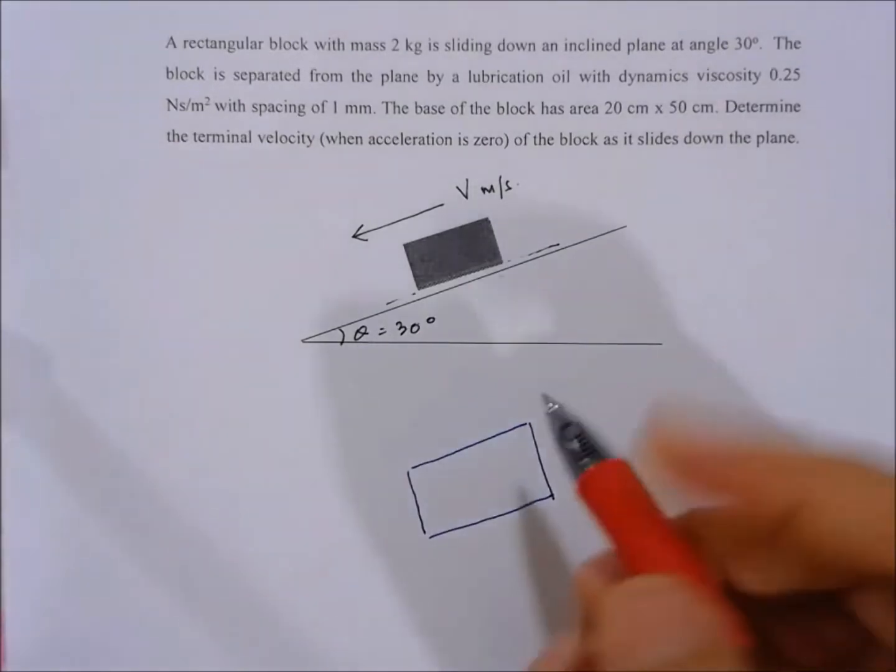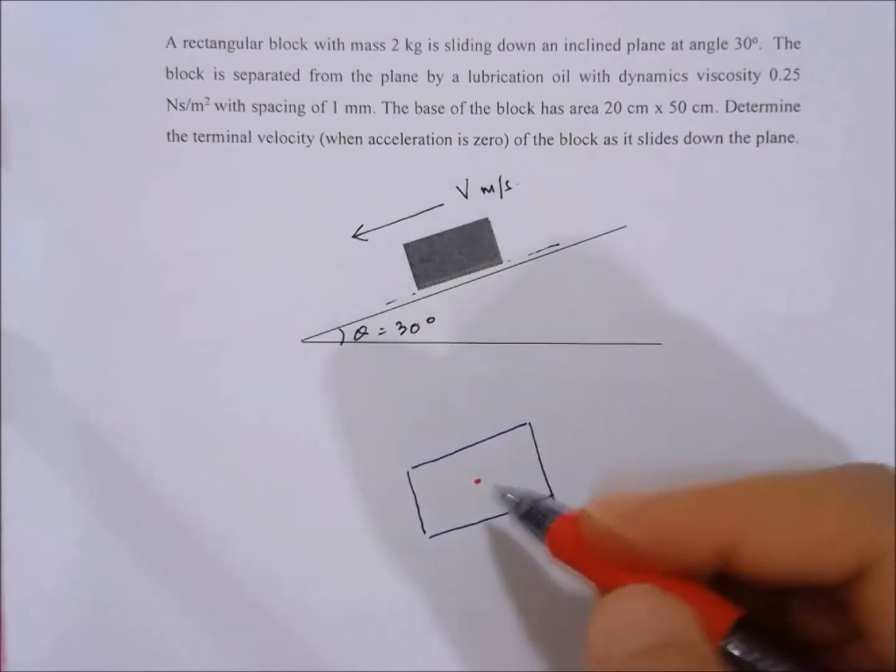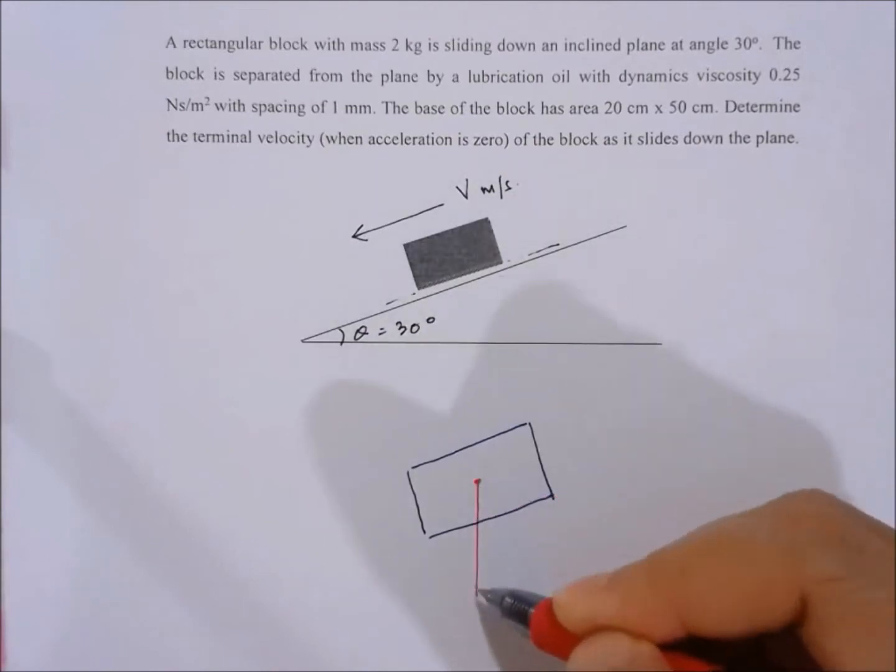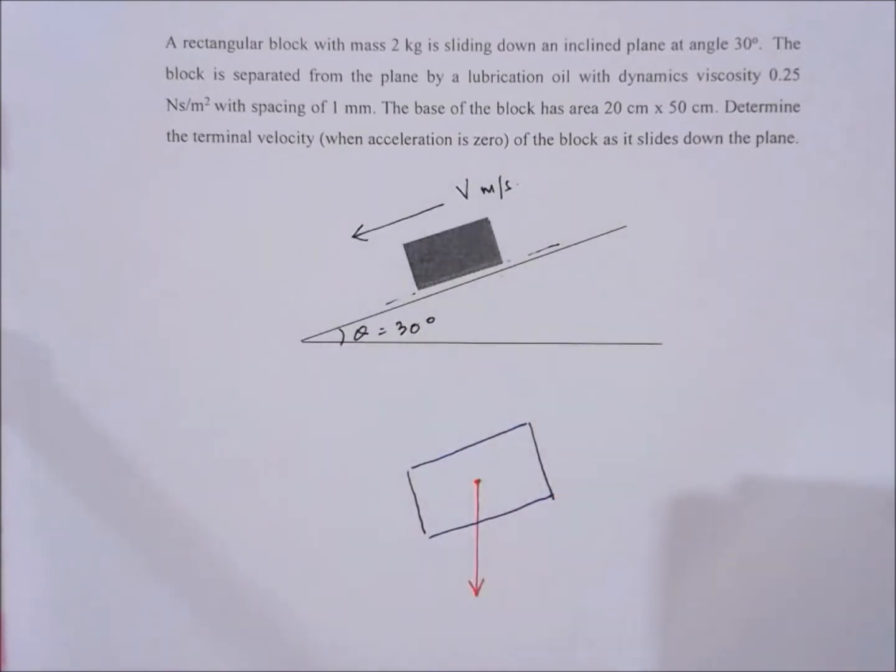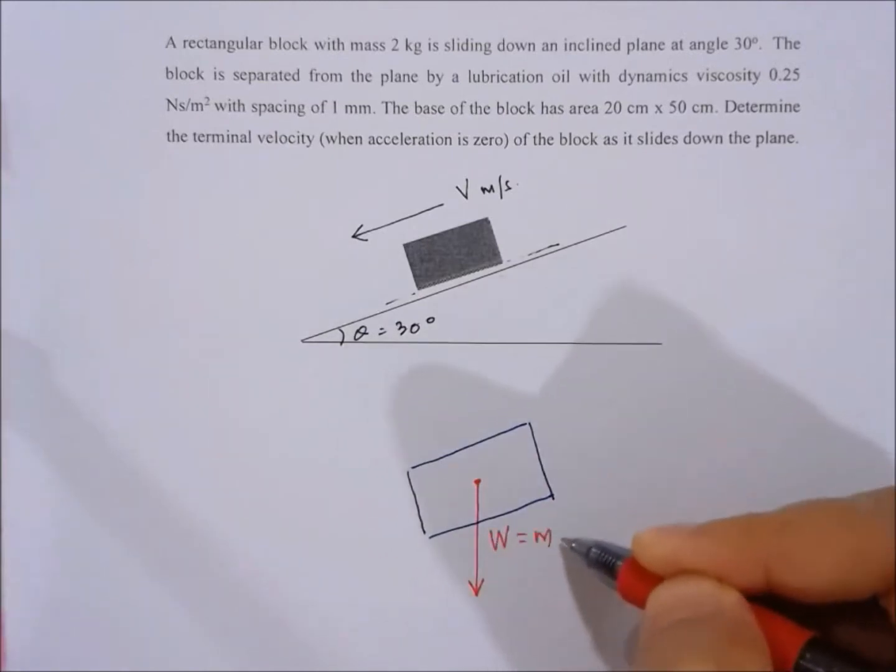there will be a gravitational force due to weight which is acting from the center of gravity of the block and directly downward. And that is equal to W which is equal to mg.